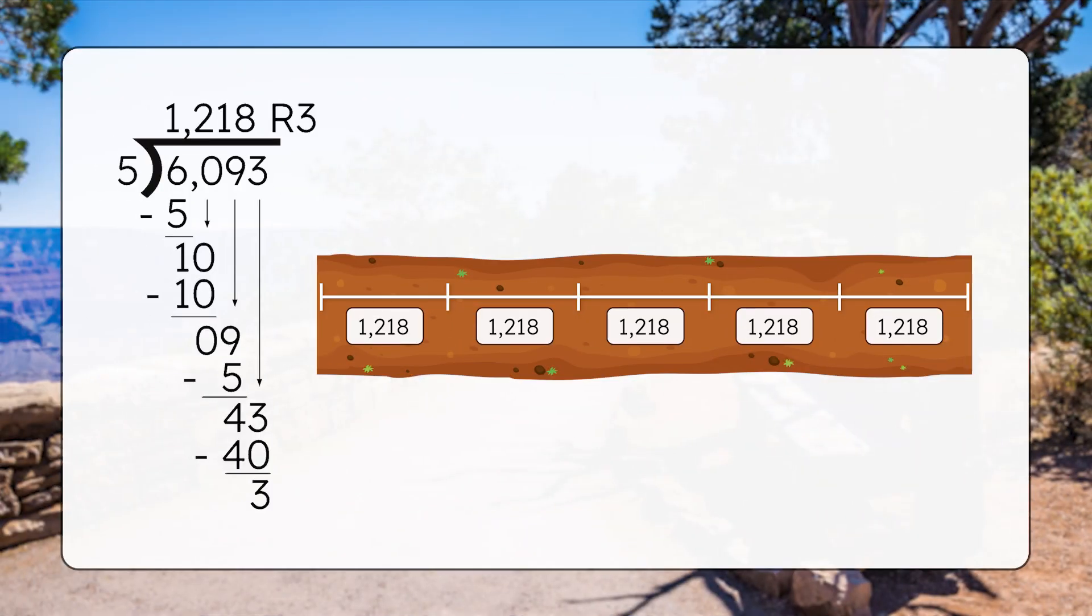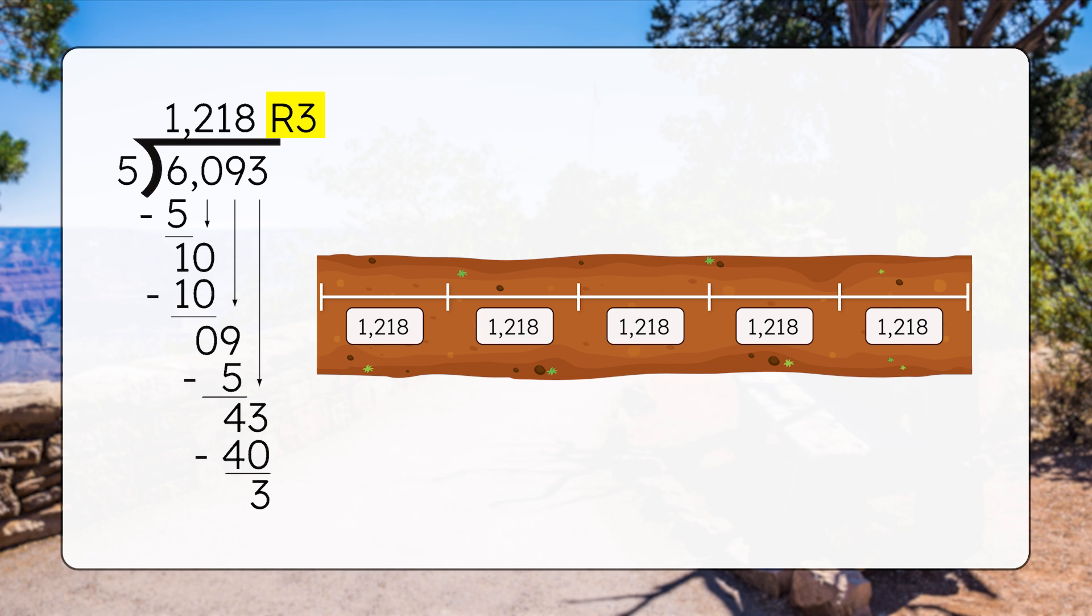But how will we include the remainder of three though? Does that mean that one or more of the sections of our hike has to be longer? It could mean that one section will have three extra feet to hike, or that three of the sections will each have one extra foot to hike. But Mia and I would prefer to split the three extra feet equally among the five sections. So instead of recording the remainder as R3, we can turn it into a fraction. Check it out.